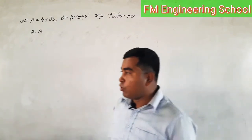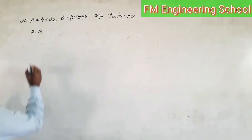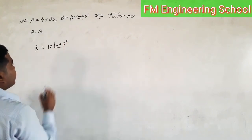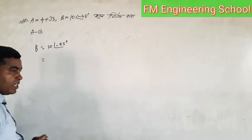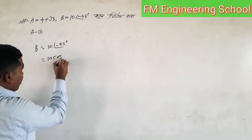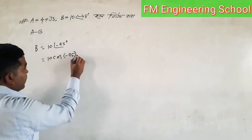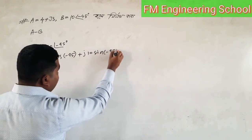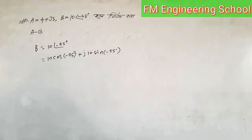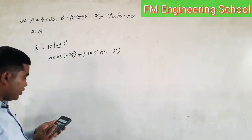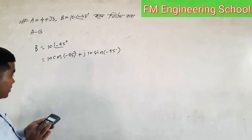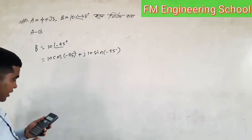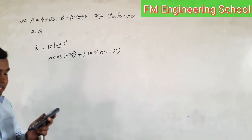So first, B is equal to 10 at minus 45 degrees. We are going to convert this: cos(minus 45 degrees) plus j of 10 sin(minus 45 degrees). So we compute cos(minus 45 degrees).